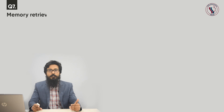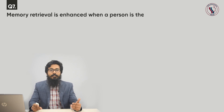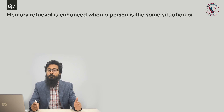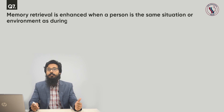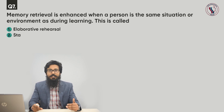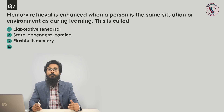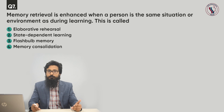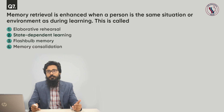Question number seven. Memory retrieval is enhanced when a person is in the same situation or environment as during learning. This is called: option one, elaborative rehearsal; option two, state-dependent learning; option three, flashbulb memory; option four, memory consolidation. The correct answer is state-dependent learning.